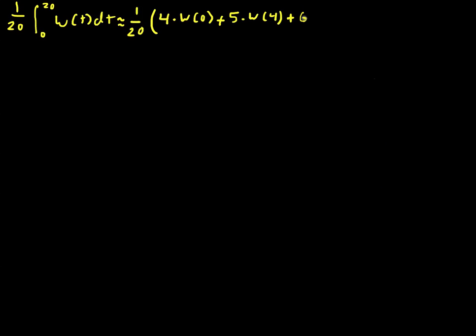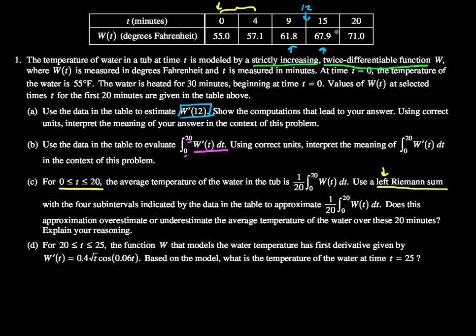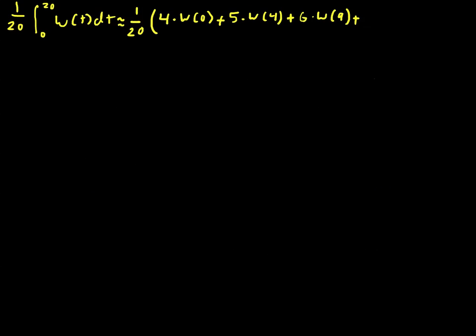And we go off W of 9 to get that height, so 6 times W of 9. And our final rectangle is 5 units wide, and we use W of 15 to find that height, so 5 multiplied by W of 15.